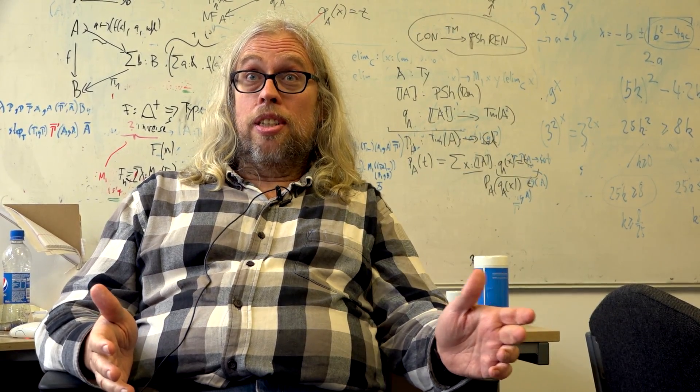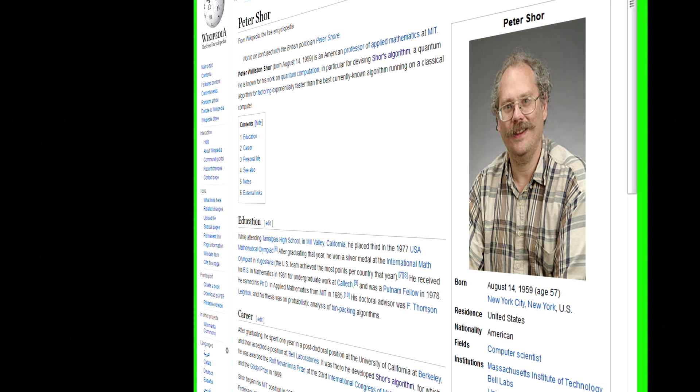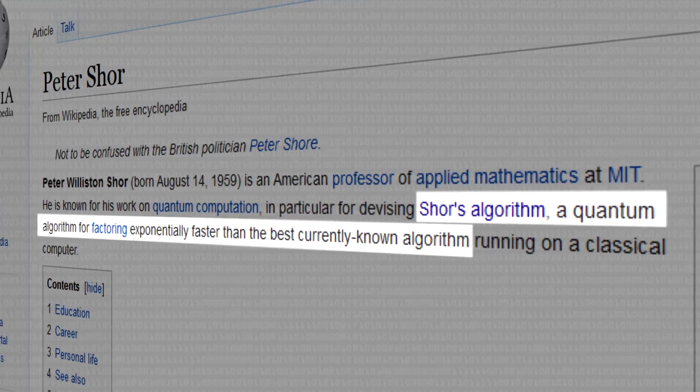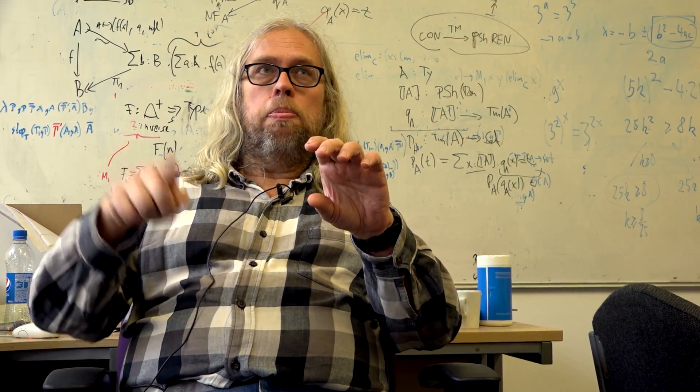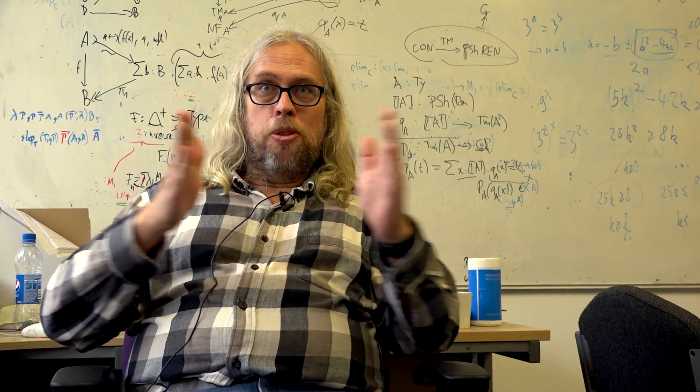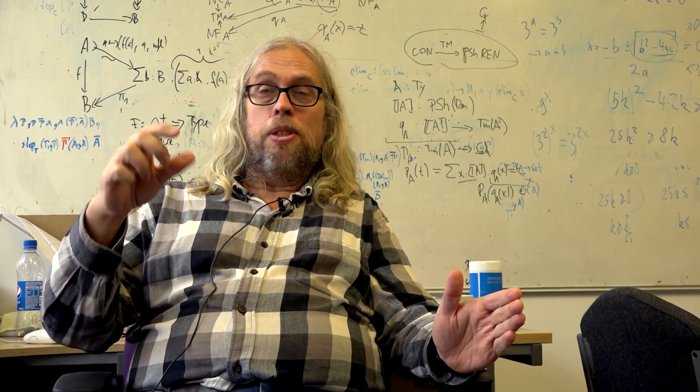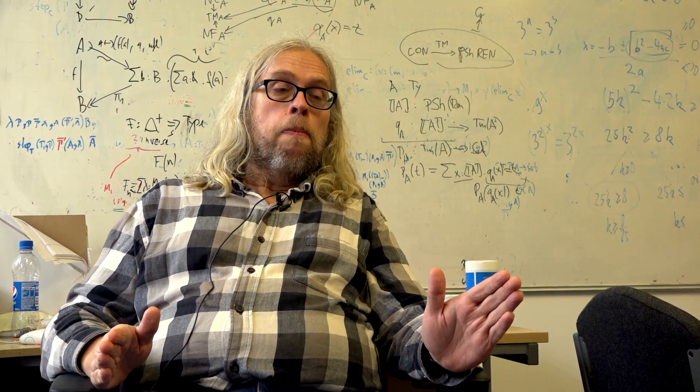But since Shor, the Shor algorithm, we know on a hypothetical quantum computer, using this quantum parallelism, there is a clever way to do this. It uses a certain number theoretic function, which has a period, repeats itself. And using this superposition of qubits, you can actually, with a good probability, measure this period, the repetition. And from this period, you can then find a factor. That's quite clever.